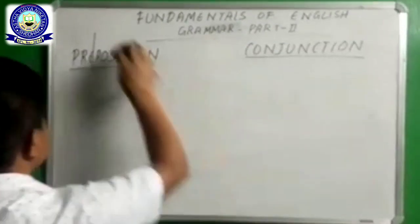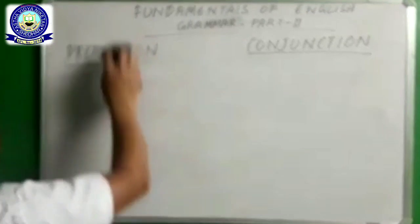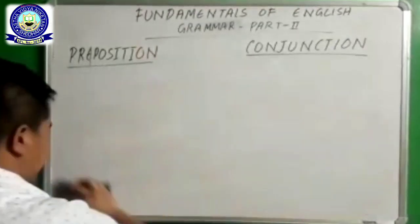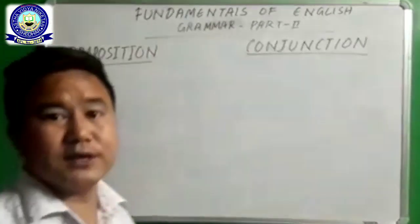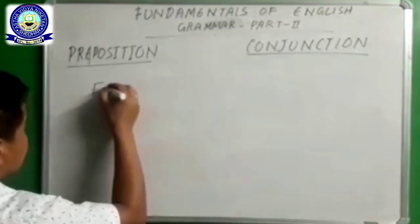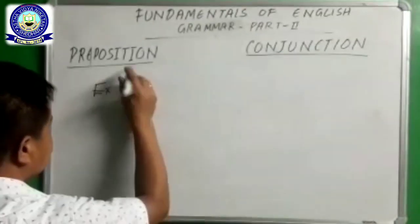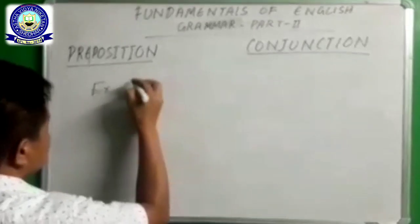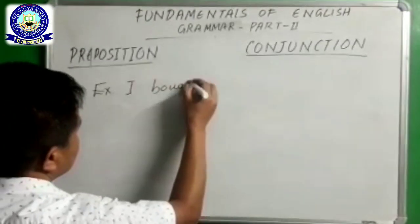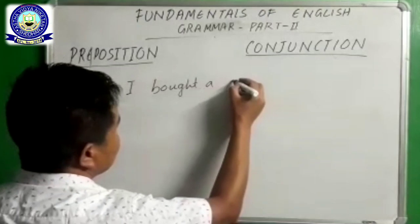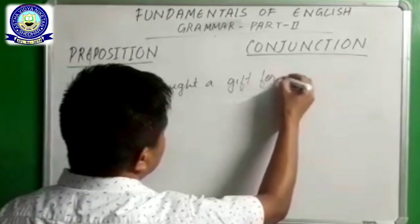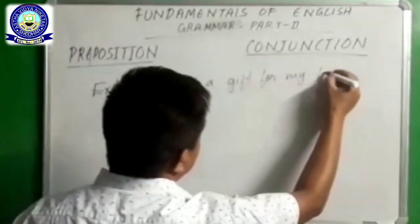Now let me give you some more examples about preposition and conjunction — in what way they work in a sentence, and how to identify preposition and conjunction in a sentence. First example: 'I bought a gift for my father.'